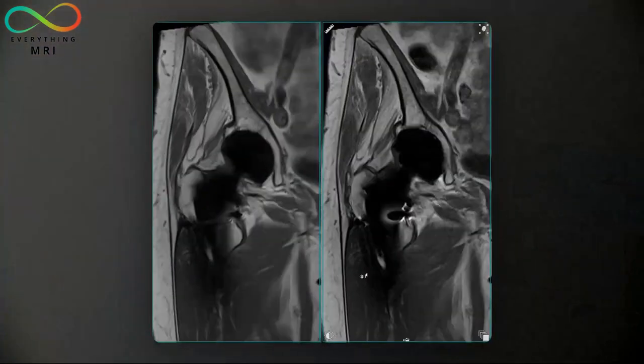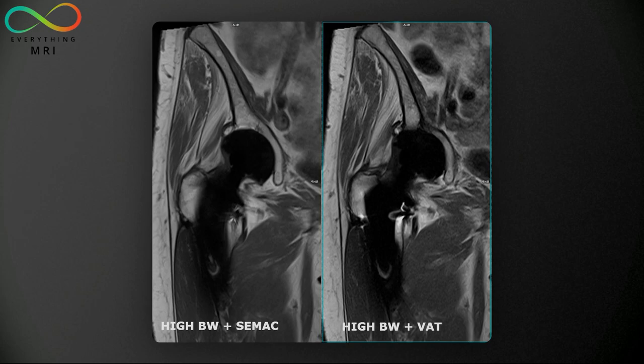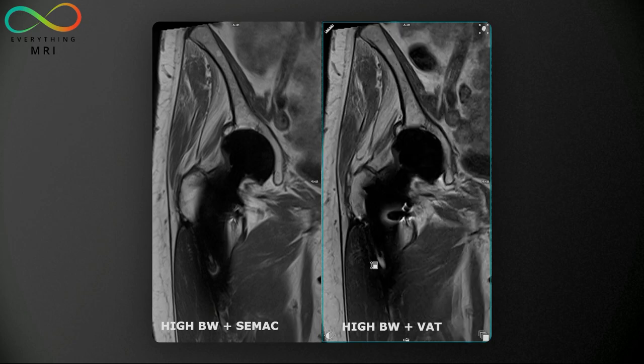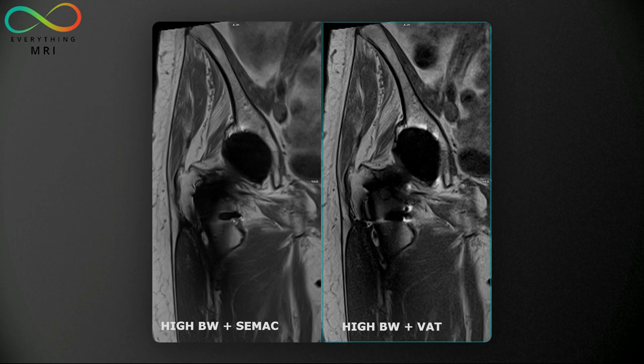Here we have a direct comparison between high bandwidth sequences — one with the application of CIMAC and the other with VAT only. In the image on the left we gain a great component of signal, and the use of CIMAC contributes to significantly reducing the signal loss and signal pile-up around the implant. Overall, there is a clearer vision of the profile of the implant in the CIMAC sequence — which, don't get me wrong, looks pretty good with VAT only as well — but CIMAC seems to be the game-changing technique of the two.